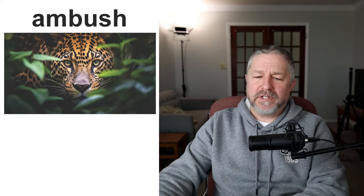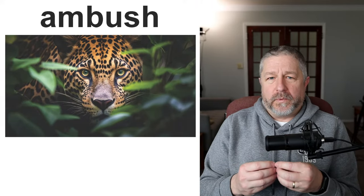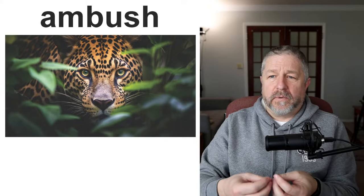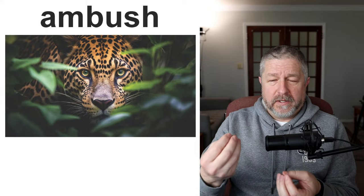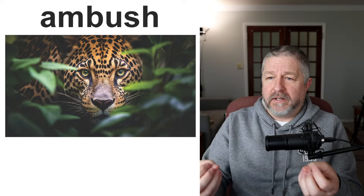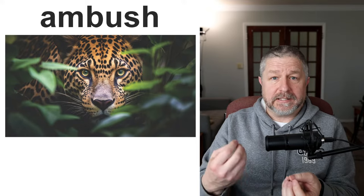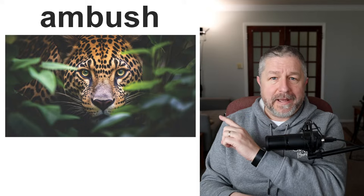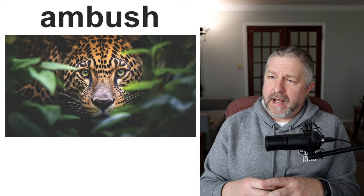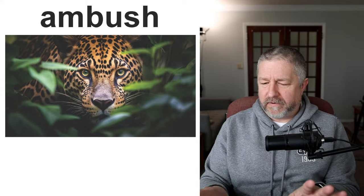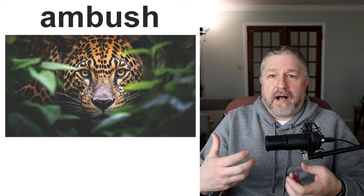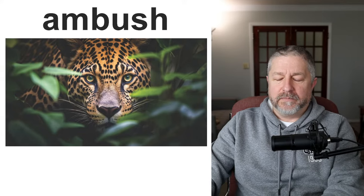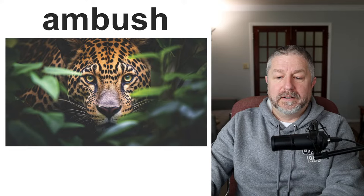An ambush is an interesting thing. An ambush is when a person, several people, or even an animal hides and waits for someone. For example, people hiding in the trees along the side of a road waiting for someone to walk or drive by so they can attack. This jaguar in the picture is waiting — it's going to ambush someone. When you hide in order to jump out and attack someone, we say you are going to ambush them.